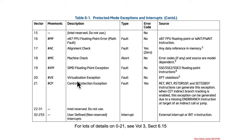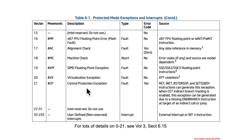Other interesting ones include an interrupt used for virtualization and extended page tables, and the control protection exception. This one is related to CET — control flow enforcement technology — a newer security mechanism. For all of these exceptions and interrupts, there are individual manual pages for each of them, starting in section 6.15, if you want to go dig into those.